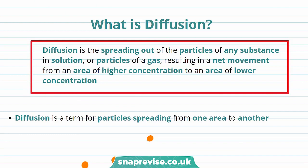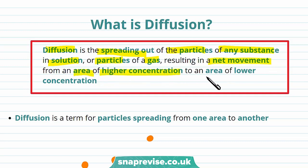First of all, we're going to look at the process of diffusion. But what is diffusion? Well, the definition of diffusion is the spreading out of the particles of any substance in solution, or particles of a gas, resulting in the net movement from an area of higher concentration to an area of lower concentration. This might sound a little complicated, but don't worry — diffusion is actually quite simple.